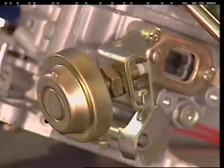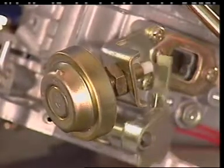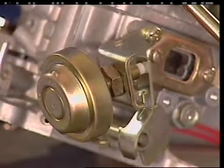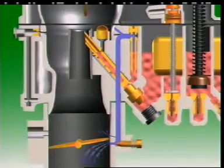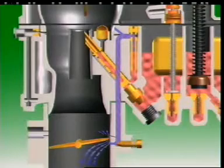The throttle positioner and dashpot slow down the rate of closure of the throttle plate. This allows more time for air to enter the manifold and for the fuel to vaporize before the throttle is completely closed.